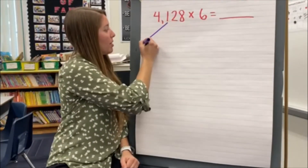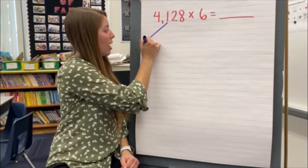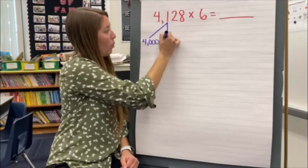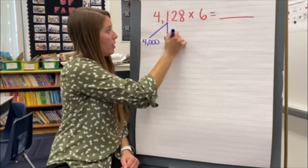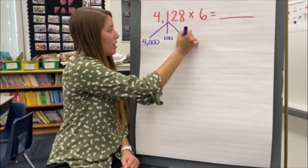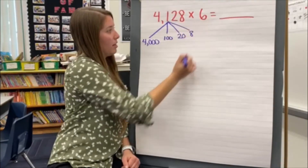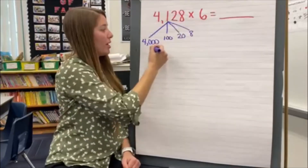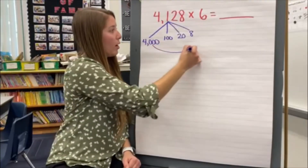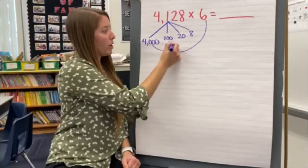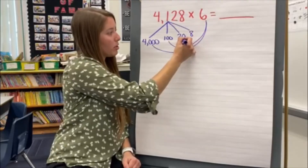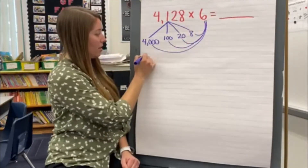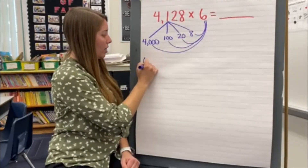So if I break up this number 4,128, it breaks into 4,000, 100, 20, and 8. Then I'm going to multiply each of those sections by 6: 4,000 times 6 plus 100 times 6 plus 20 times 6 plus 8 times 6.